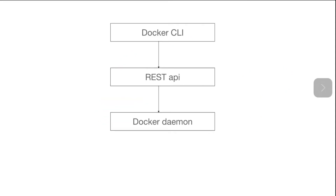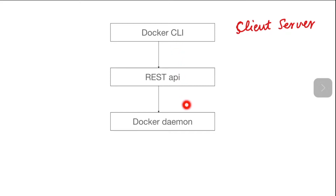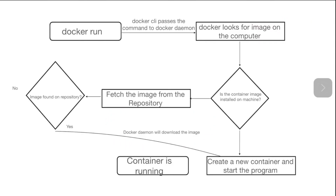Docker CLI and Docker Daemon follow a client-server architecture. Docker CLI acts as the client and Docker Daemon acts as the server. When we write a command such as docker ps, the Docker CLI takes the command, parses it, and if everything is okay, it will convert the command into a REST API call and will make an API call to the Docker Daemon. The Docker Daemon will do all the necessary steps required for the execution of those instructions.